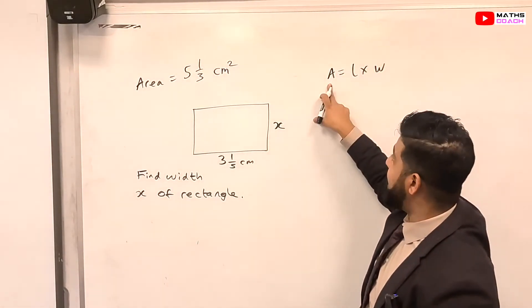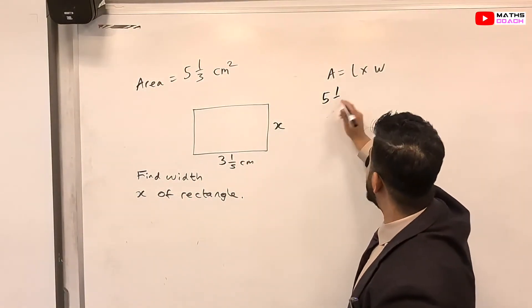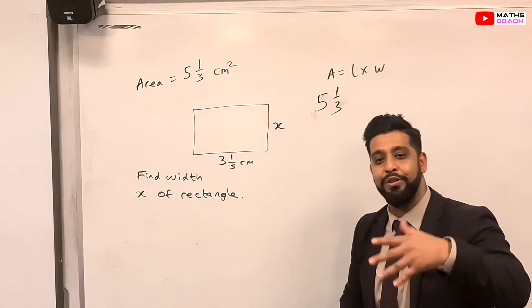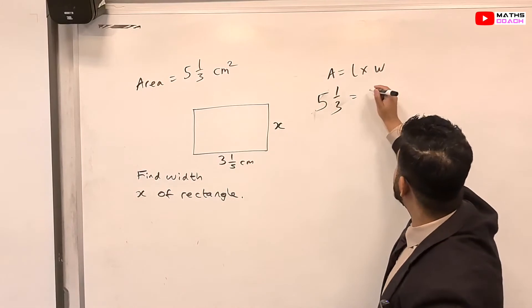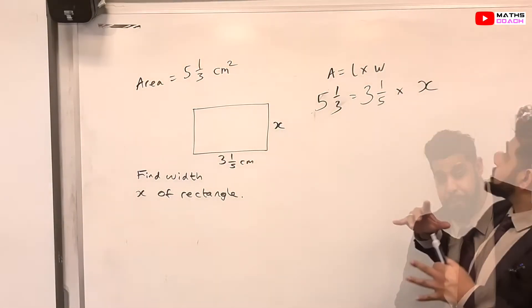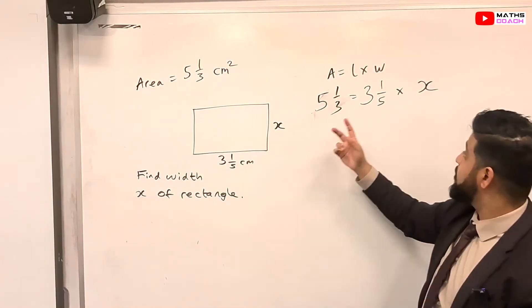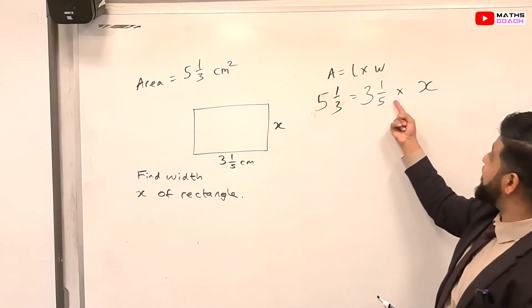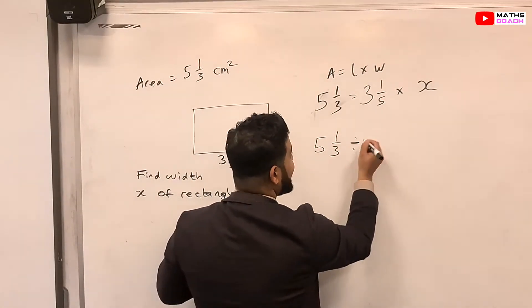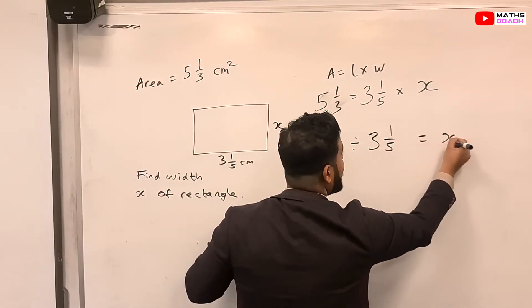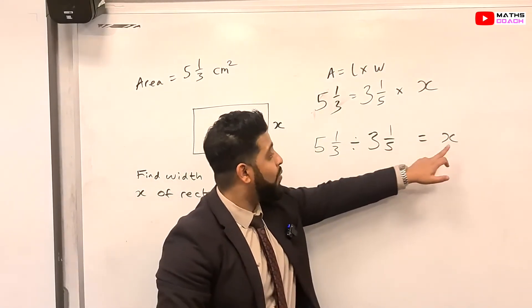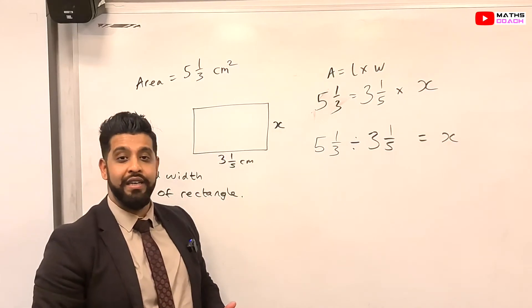Which of those do we know? We know the area is 5 and 1/3. What else do we know? We know the length. The length is 3 1/5, and we don't know the width, which is x. So let's write the x here. So in order to find x, we will do the reverse operation. So we'll take this 3 and 1/5 over to the other side by doing the opposite operation of multiplying, which is divide. So we end up with the following: 5 1/3 divided by 3 1/5. And that will equal our x. And there we have it. We now have a fraction that we know how to deal with. If we calculate this, we have calculated x. And x is the width of our rectangle. And we've answered the question.